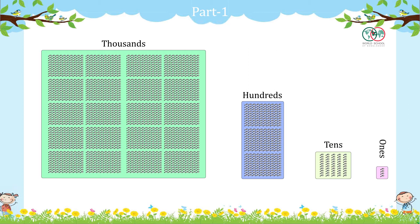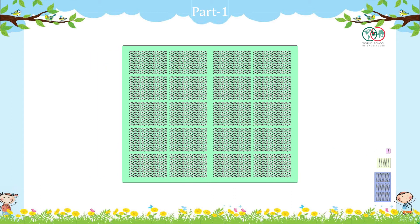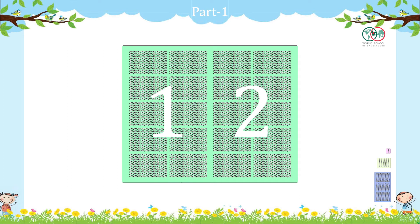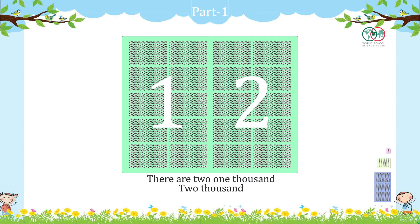If you want to see, there are 10 groups in each group. Let's see: 10 groups of 100 makes 1,000. Now let's start counting with blocks. How many groups are there? 1, 2. There are 2,000.